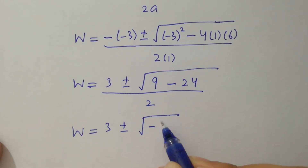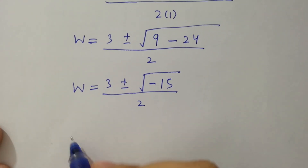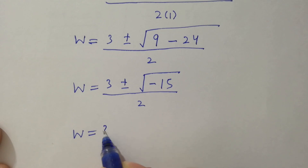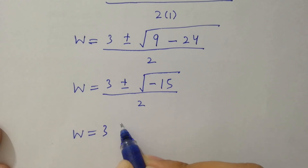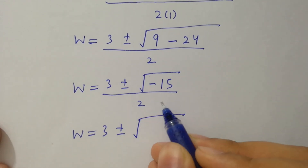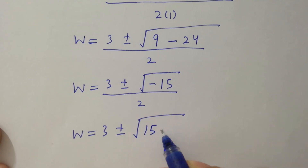We have w equals 3 plus or minus square root of minus 15 over 2. The square root of minus 15 is the same as square root of 15 times minus 1.